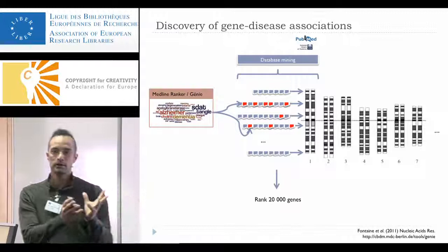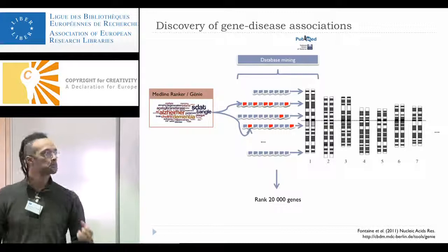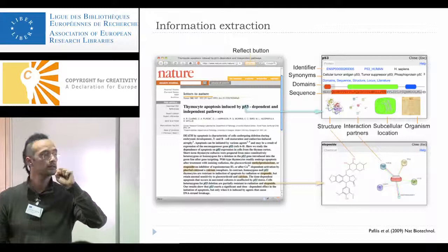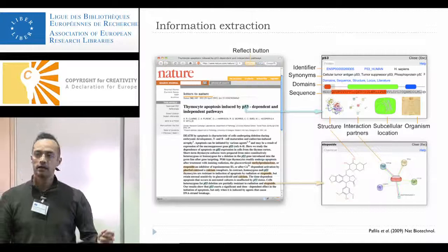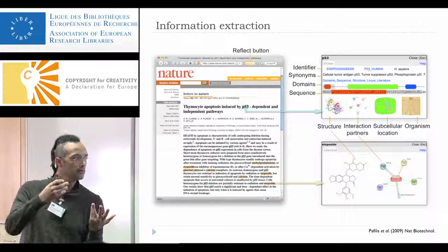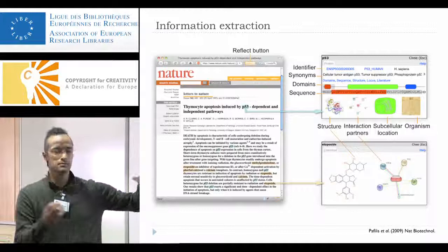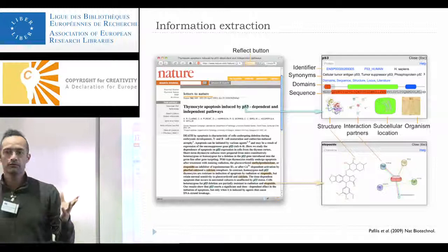Another application of text mining is to extract very particular information from text. This is an example application called Reflect, which helps deal with the huge literature where each article has many links to biomedical databases. The tool automatically detects gene names, chemical names, and other terms, and provides pop-ups with extra information and extra links — an enriched way to read articles.